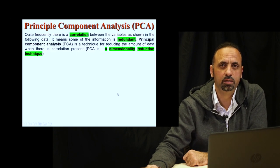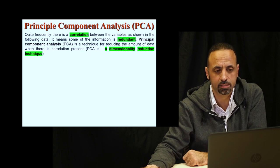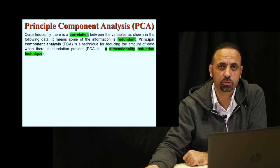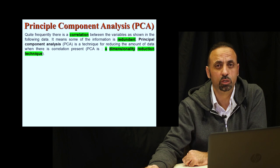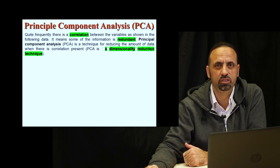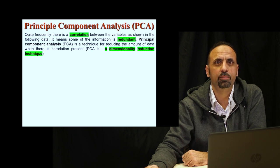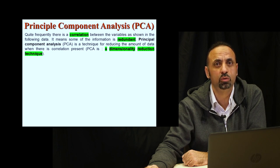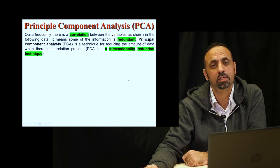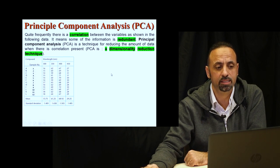One of the most important topics in chemometrics and multivariate analysis is Principal Component Analysis. Sometimes, especially for spectral data, you can find a correlation between variables. You cannot use variables that are already correlated — correlation means they have the same trend, growing together or inversely. You cannot use both at the same time, so you need to reduce the dimensionality by getting rid of correlated variables. One method for this is Principal Component Analysis.